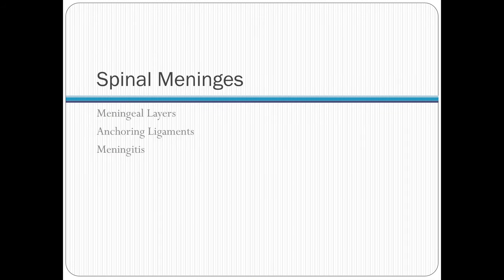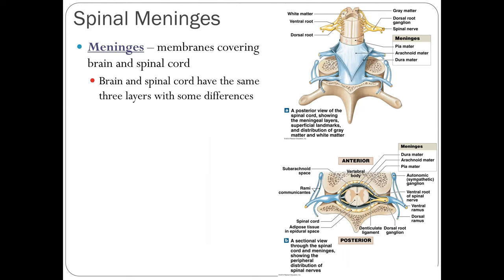The meninges are membranes covering both the brain and spinal cord. The cranial and spinal meninges are continuous with each other, and both have the same three layers, though with slight differences. For example, the dura mater in the cranial meninges has two layers, whereas in the spinal cord it does not. The spinal cord also has an epidural space, which is not present in the cranial meninges.